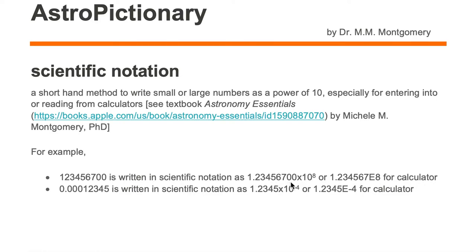This 1.234567 times 10 to the eighth means move the decimal point eight spots to the right to return back to the whole number.